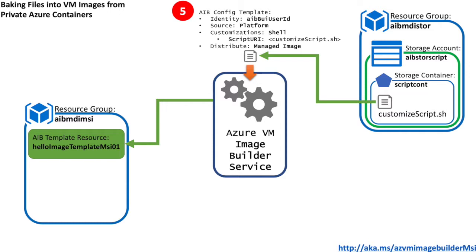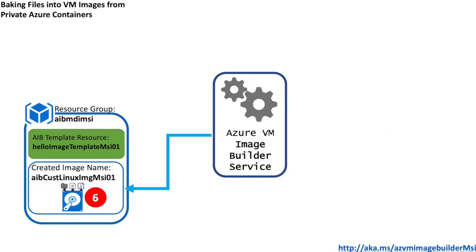Once you've completed the configuration template, you submit it to the Azure VM ImageBuilder service. At this time ImageBuilder will create a staging resource group and storage account and download the custom script.sh to it. You will also see that an Azure ImageBuilder template artifact has been created in the resource group. You then invoke run on the ImageBuilder template resource, which will kick off the image build, and a short while later you'll see that custom image injected into that resource group.